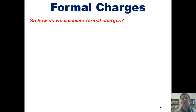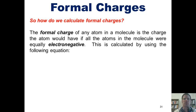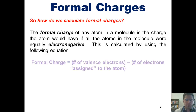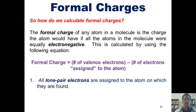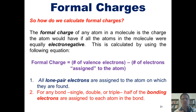For Lewis structures that have charged atoms, the more stable structure will be the one that gives negative formal charges to the most electronegative atoms. The formal charge of any atom in a molecule is the charge the atom would have if all of the atoms in the molecule were equally electronegative. This is calculated using the following equation: formal charge equals the number of valence electrons in that atom minus the number of electrons assigned to the atom. All lone pair electrons are assigned to the atom on which they're found, and for any bond — single, double, or triple — half of the electrons in that bond are assigned to each atom sharing that bond.